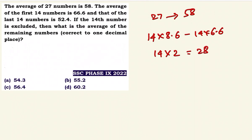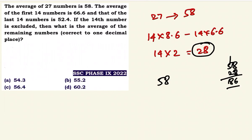So 28 numbers are covered by first 14 and last 14 combined, but one number is repeated — the 14th number. The difference: 58 plus 28 gives us 86. The 14th number is 86.